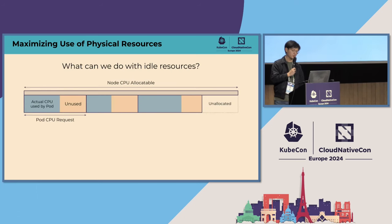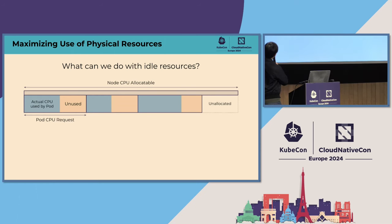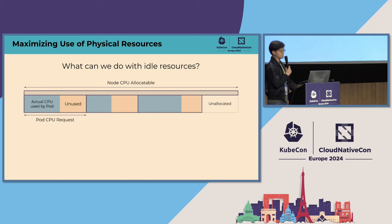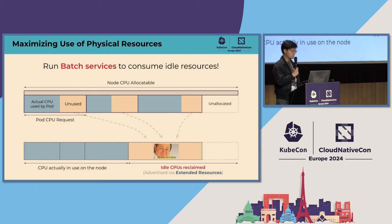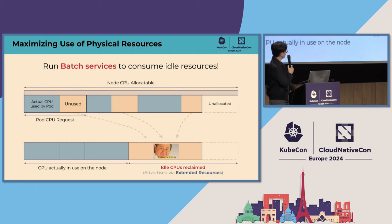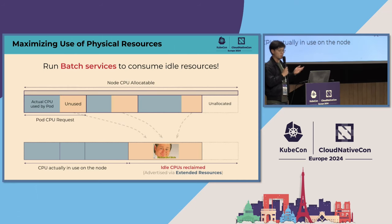So how can we make our resources more efficient? This is one approach we took from a node level. In blue, we can see the actual CPU utilization in use. The orange portion represents the allocated but currently unused portion of the pod's CPU request. We also have a portion of the node CPU resources that remain unallocated. What we did is very simple — we just monitored the amount of unused resources on the node and advertised this unused portion, the orange portion, via an extended resource. We can then make use of these reclaimed resources to run much more workloads on top of just the unallocated portion.